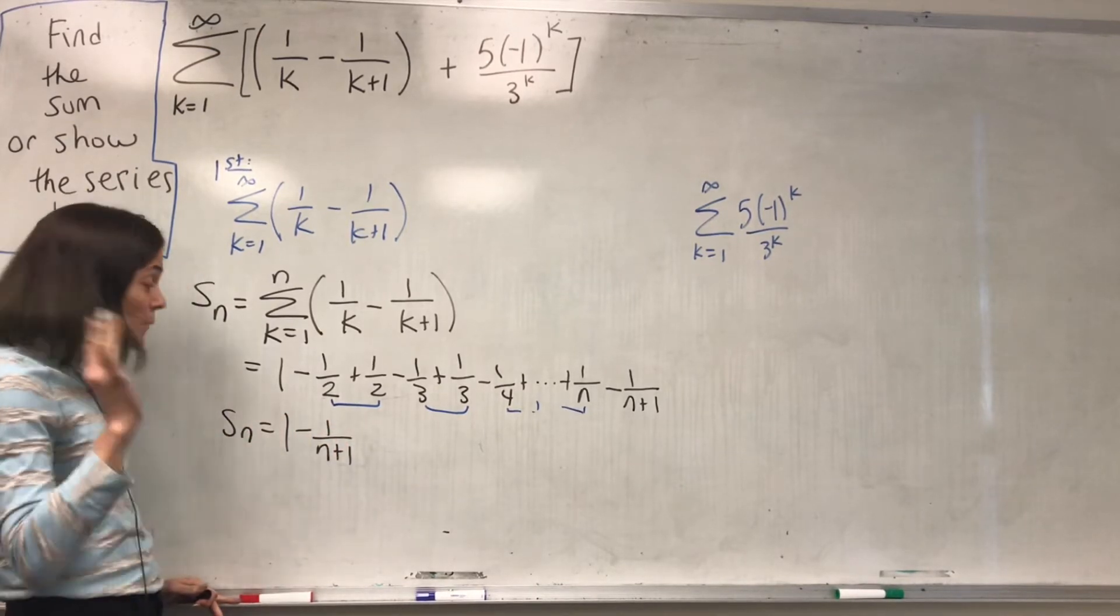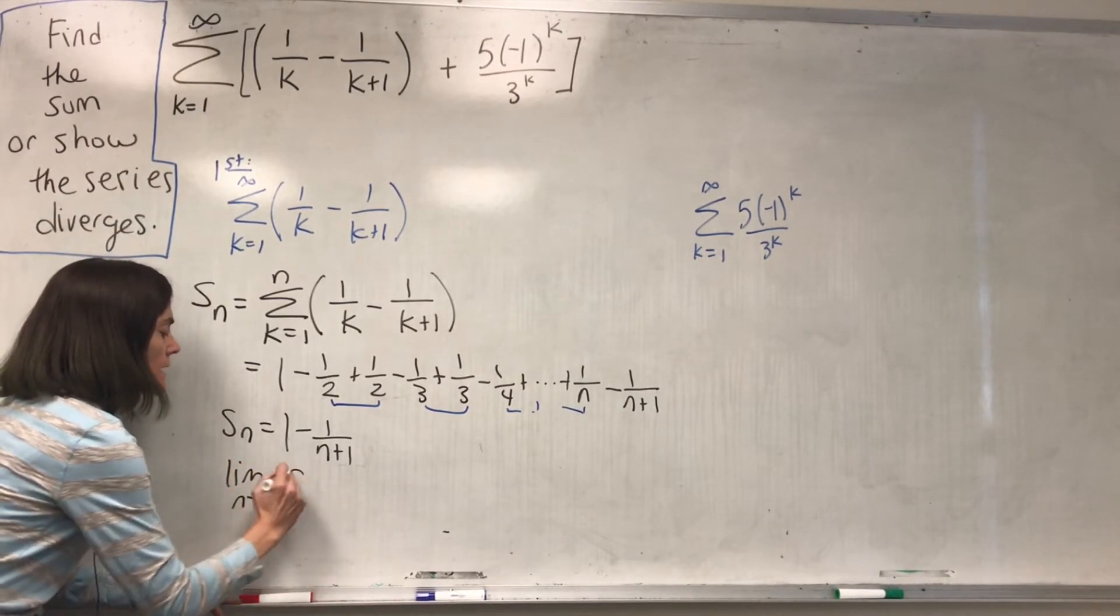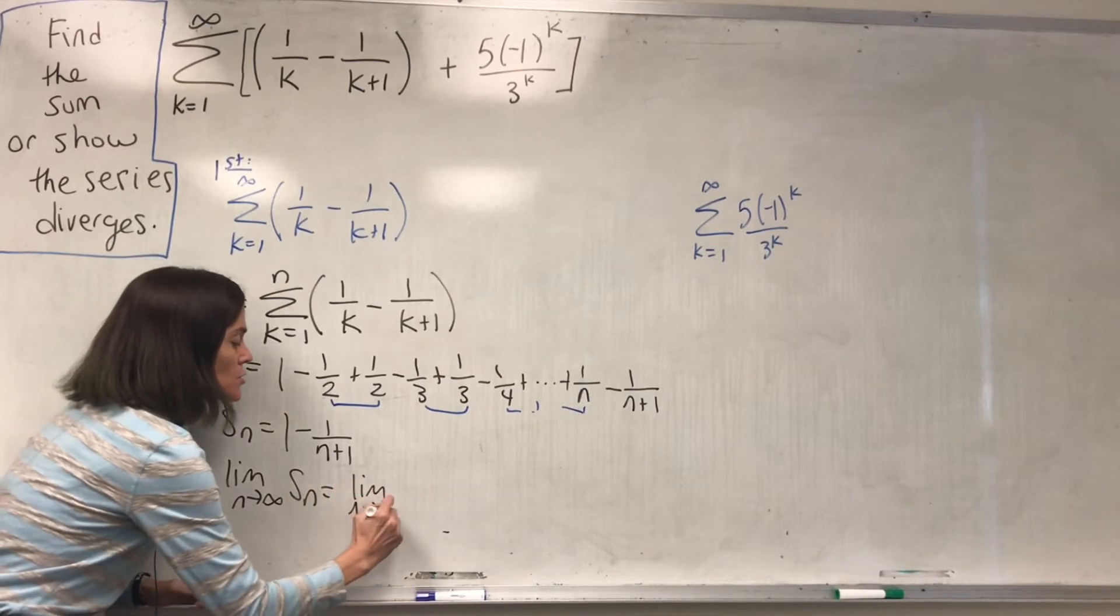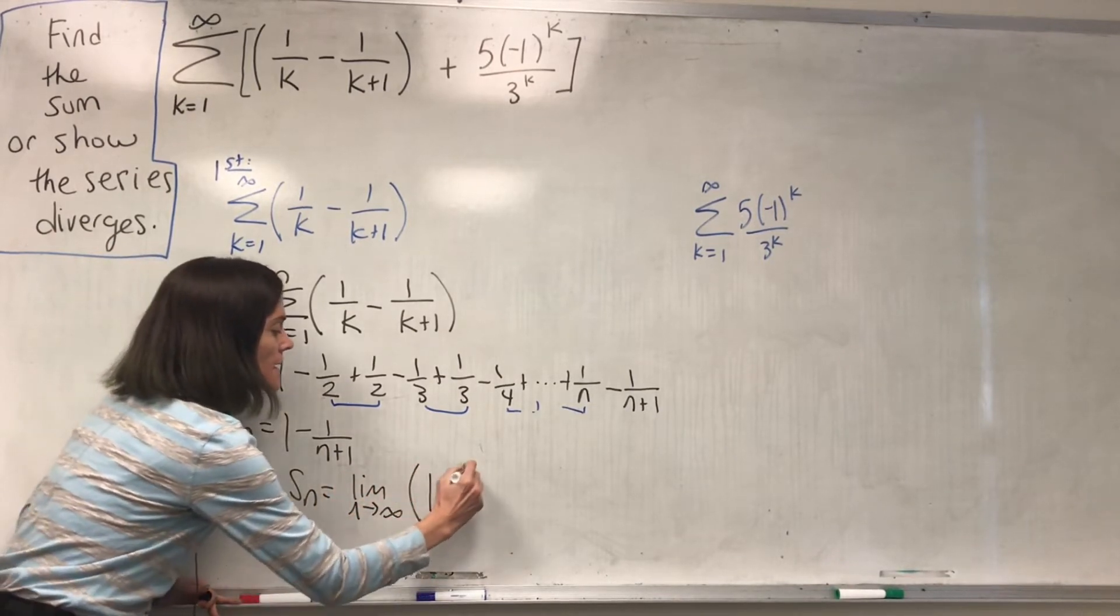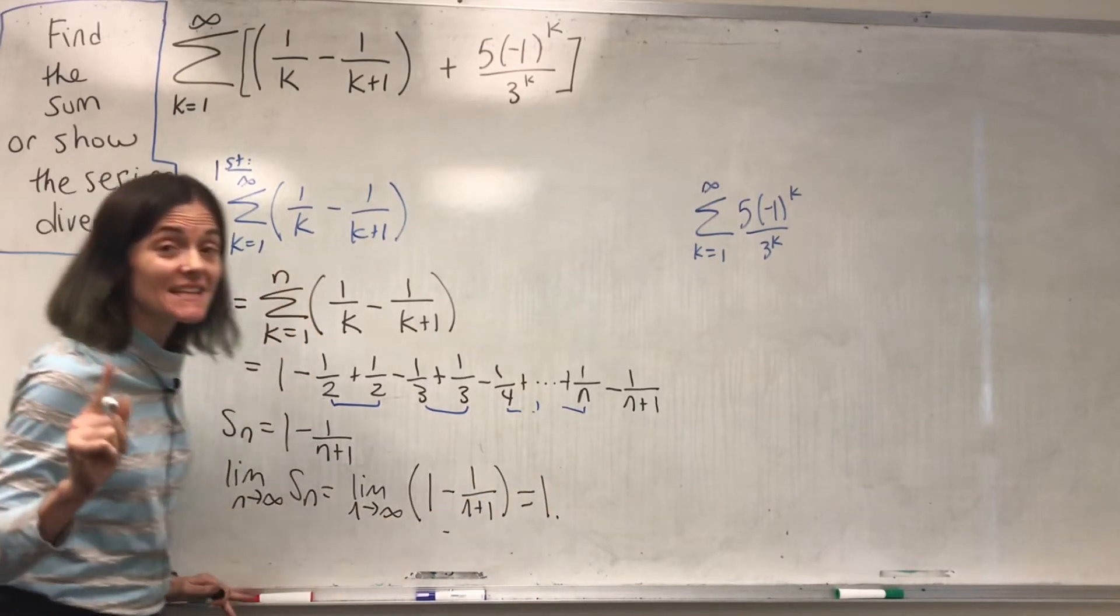Now we take a limit. As n goes to infinity of Sn, this is the limit as n goes to infinity of 1 minus 1 over n plus 1, this is 1.